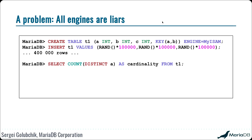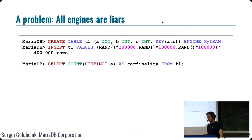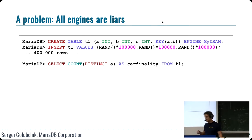Another problem: when the server asks the engine to report statistics, the server doesn't know how the engine does it, and the engine might lie — and some engines do lie. For example, in a table with three integer columns, I create a key and populate it with 400,000 rows where every value is a random number between 0 and 100,000. So there can only be 100,000 different values. Then I do SELECT COUNT DISTINCT, which exactly calculates how many different values there are.